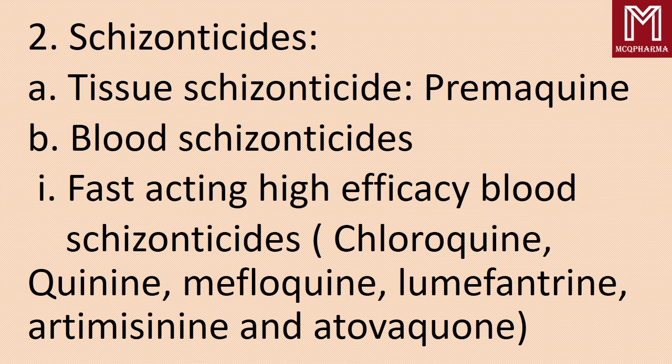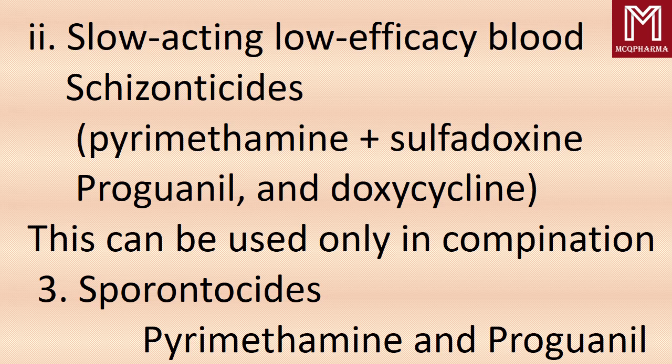Schizonticides — two types: tissue schizonticides and blood schizonticides. Tissue schizonticides — example: primaquine. Blood schizonticides: first, fast-acting high-efficacy blood schizonticides — examples: chloroquine, quinine, mefloquine, lumefantrine, artemisinin, and atovaquone. Next, slow-acting low-efficacy blood schizonticides — pyrimethamine, pyrimethamine plus sulfadoxine, proguanil, and doxycycline. These can be used only in combination.